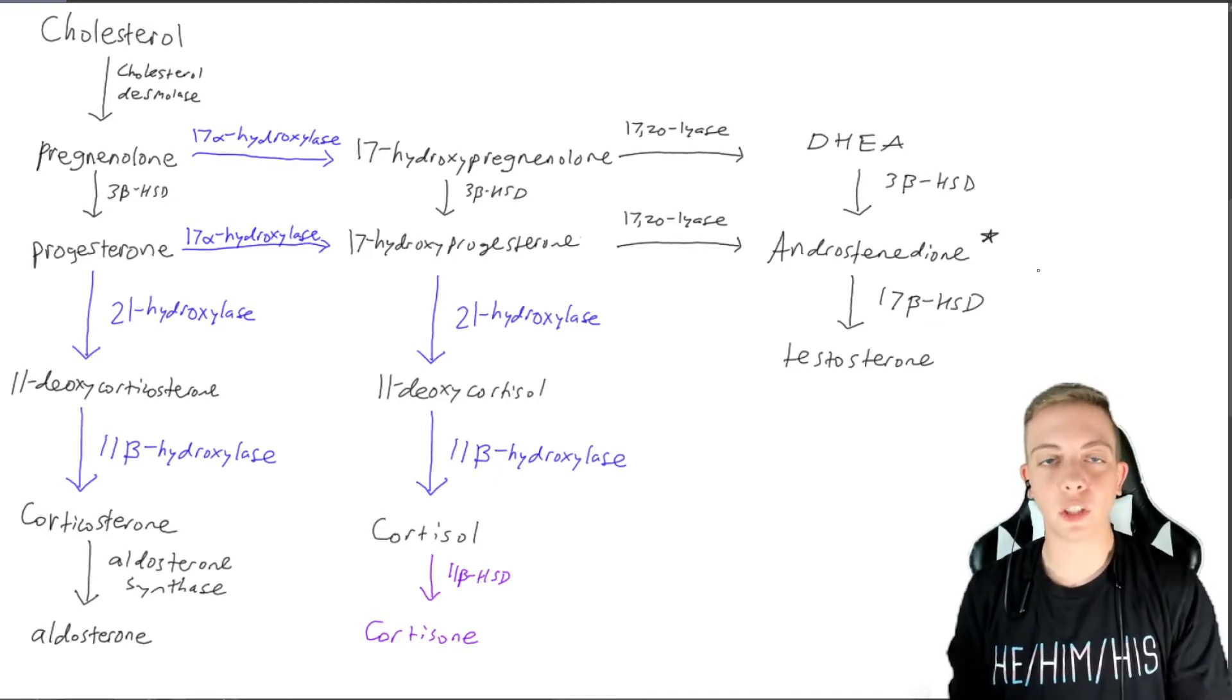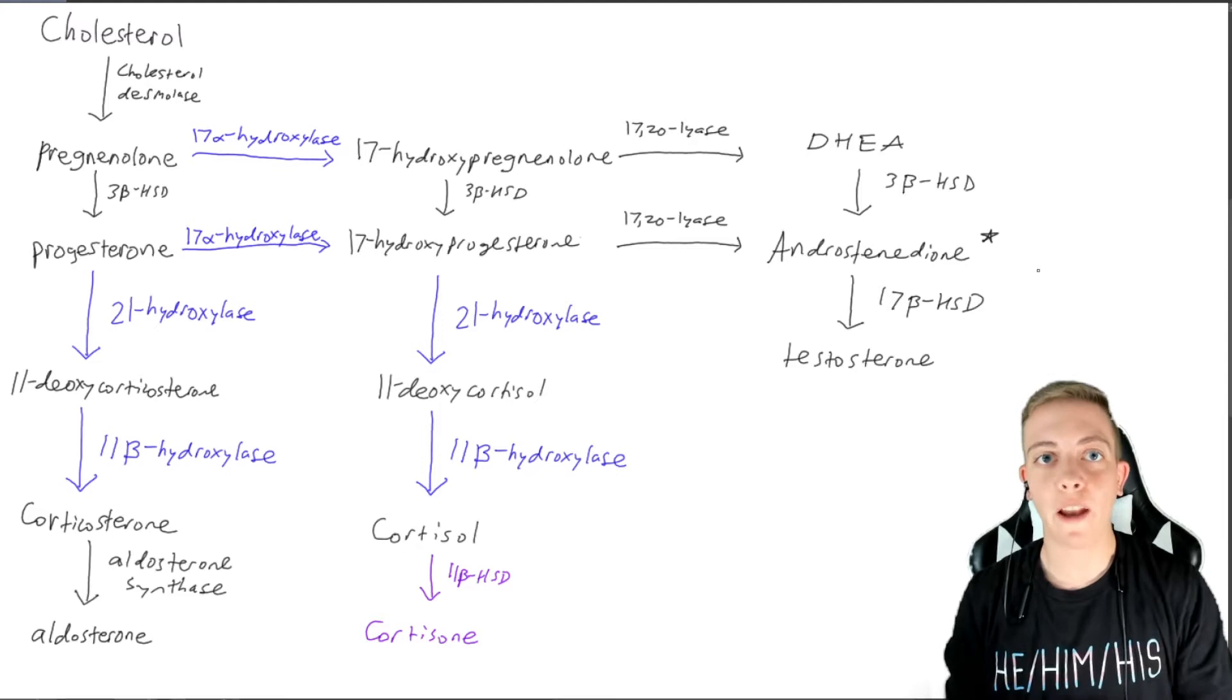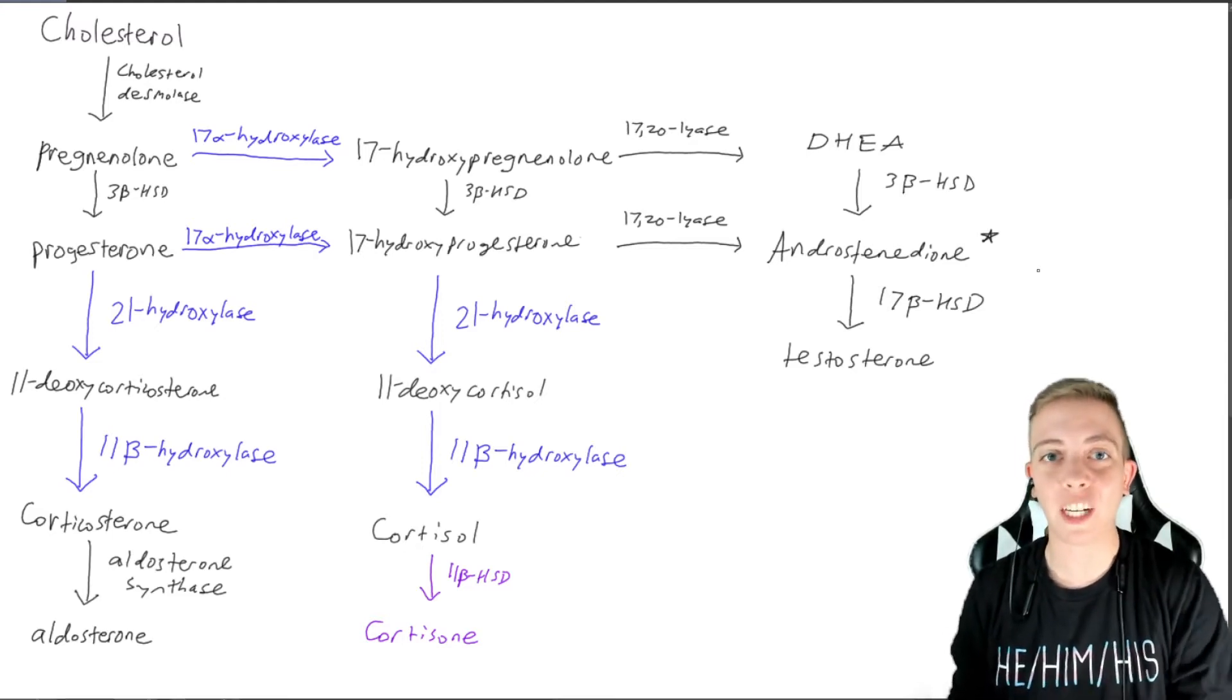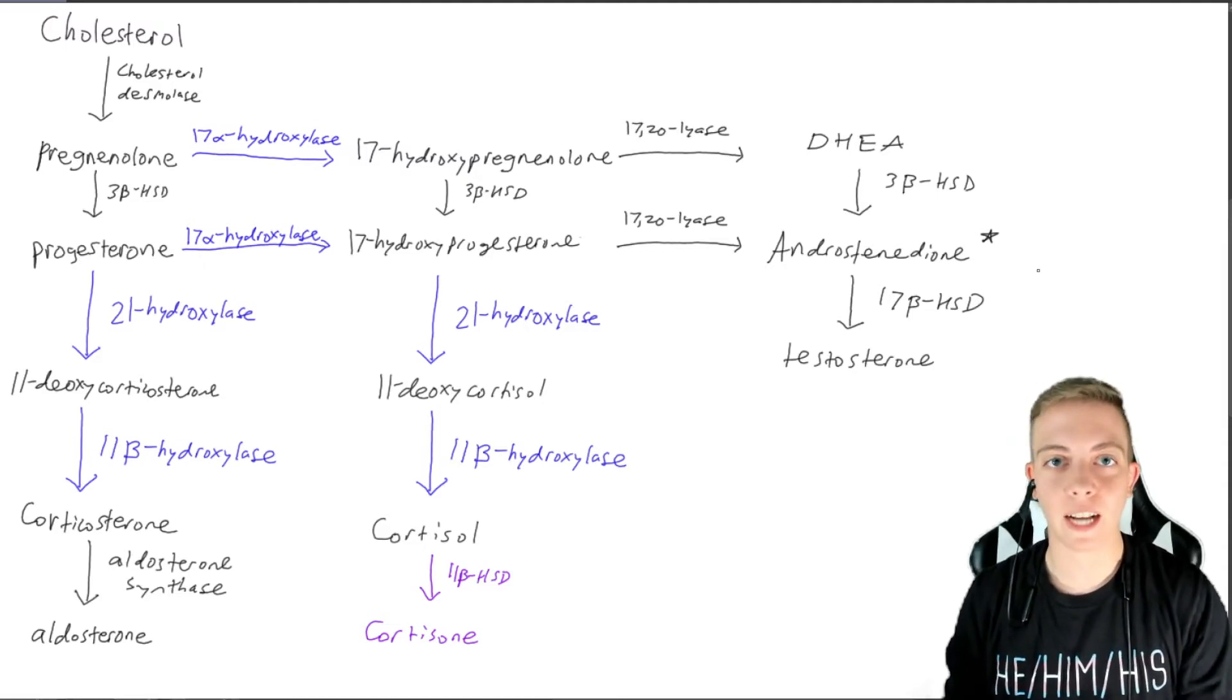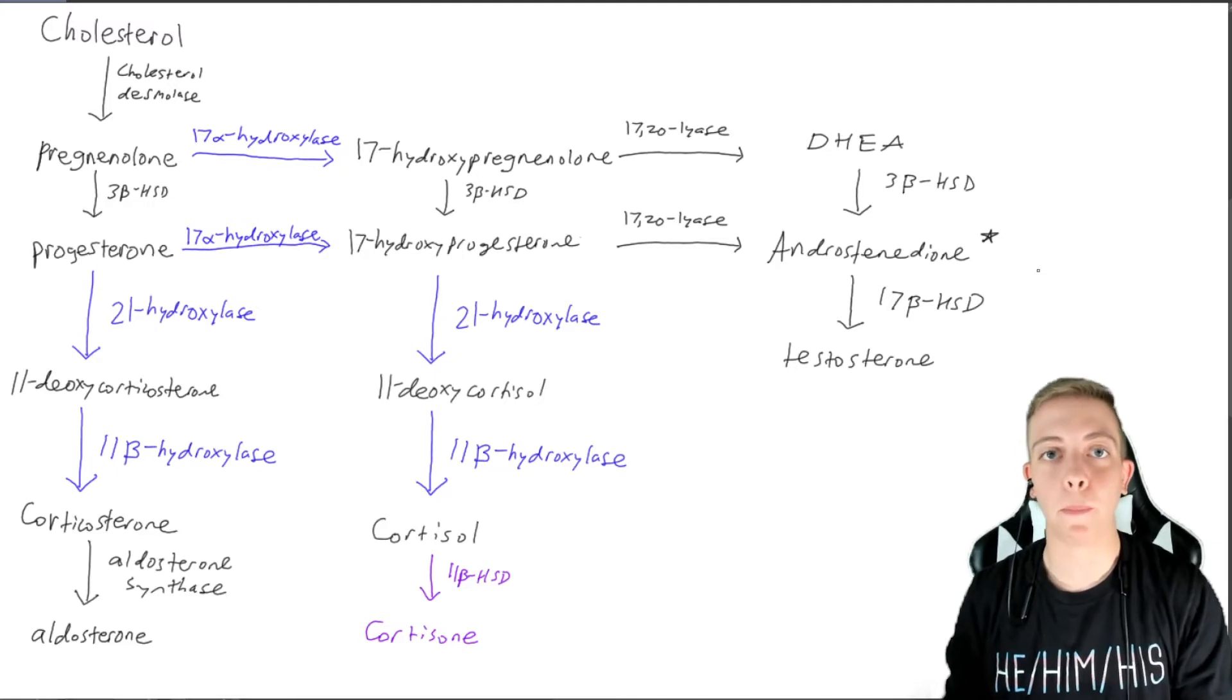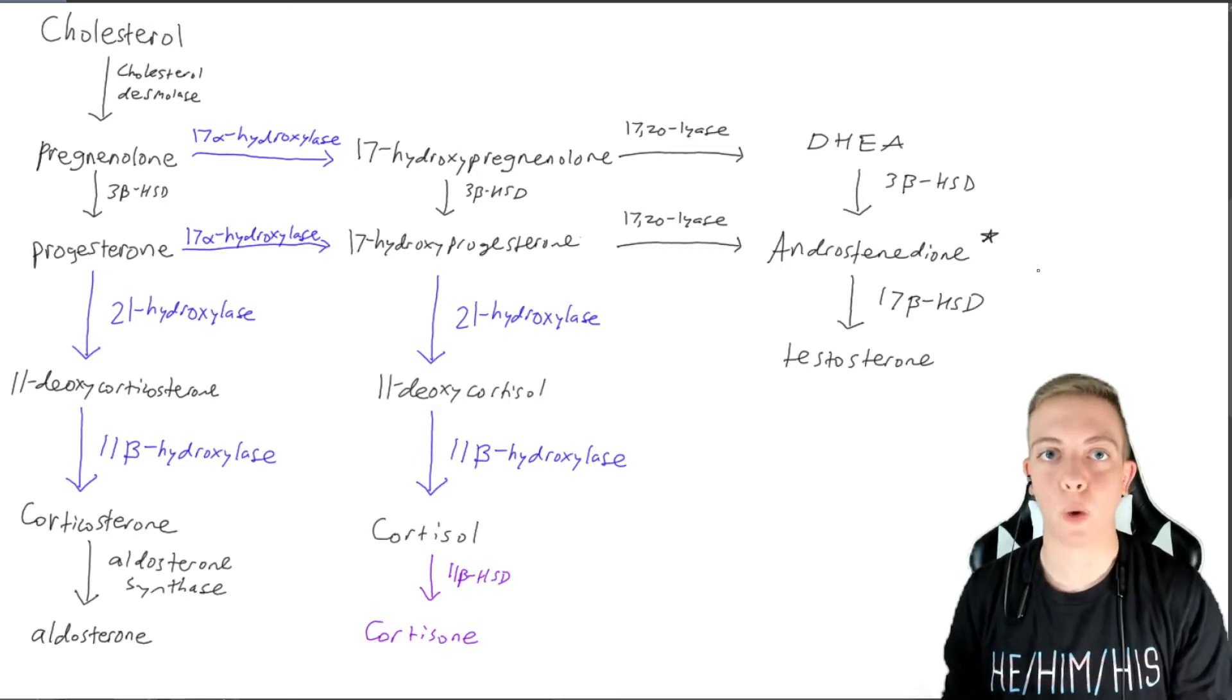So the last two videos, we talked about pathways that prevented production of aldosterone and cortisol and forced cholesterol into the androgen pathway. So we had an increased amount of androgens in the fetus. Typically, that affects an XX fetus and makes them appear more masculine. Well, today, 17 alpha hydroxylase has a very different presentation, and this one can affect both XX and XY fetuses in very different ways.